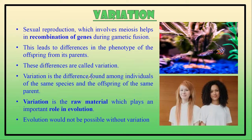Variation: Most living organisms reproduce through sexual reproduction. Sexual reproduction involves meiosis, which is otherwise called reduction division. Meiosis helps in the recombination of genes, which happens at the time of gamete formation. Recombination of genes leads to differences in the phenotype of the offspring — they differ between themselves as well as from their parents. These differences are called variation.